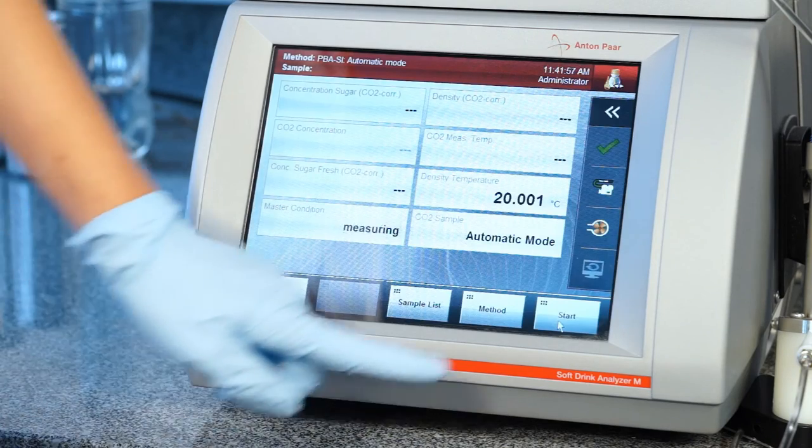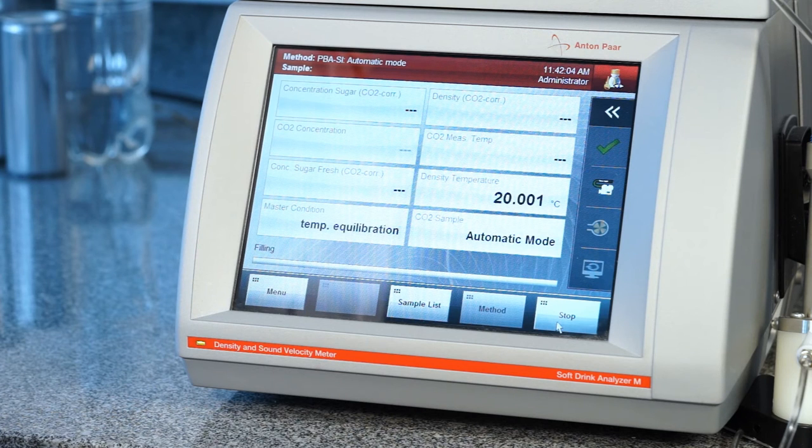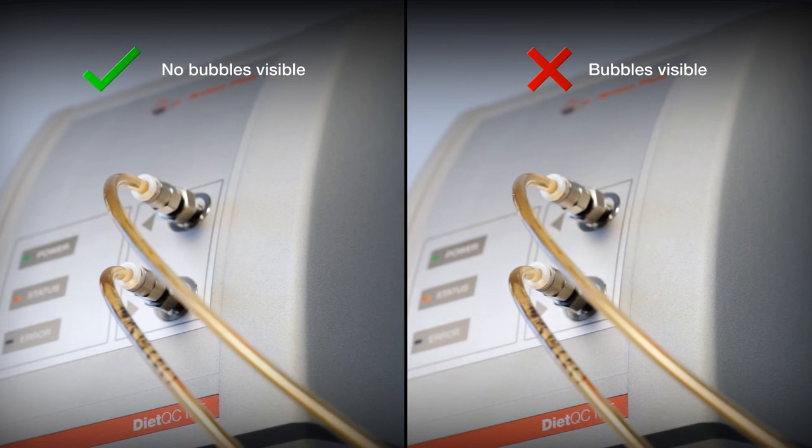The sample is transferred automatically from the container to all measuring cells. While filling, gas bubbles should not be continuously visible in the hoses. In case there are, please see the instruction manual for further steps.